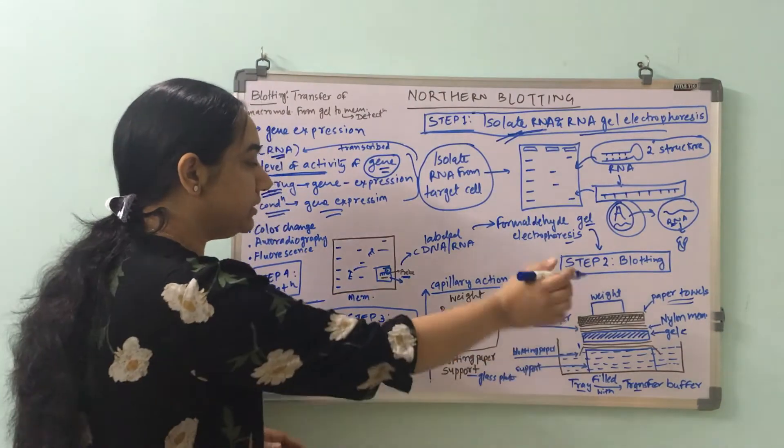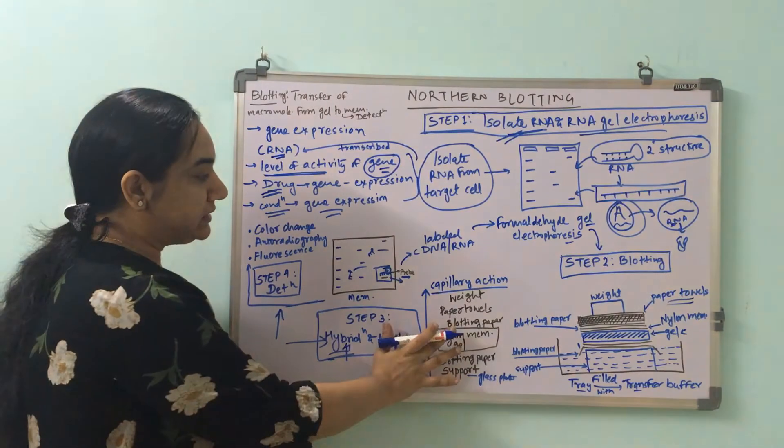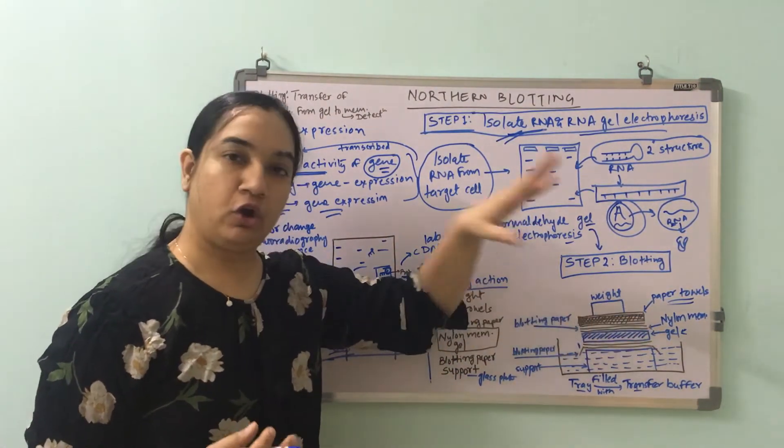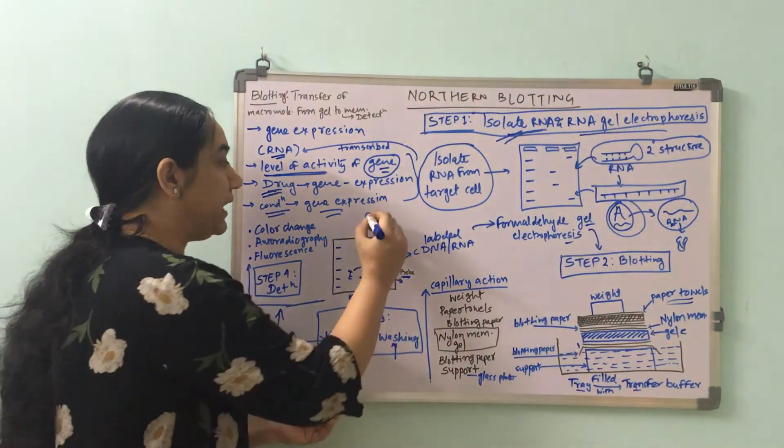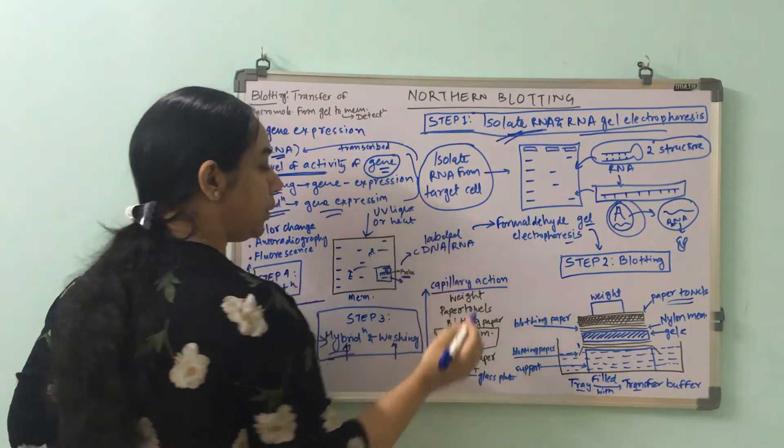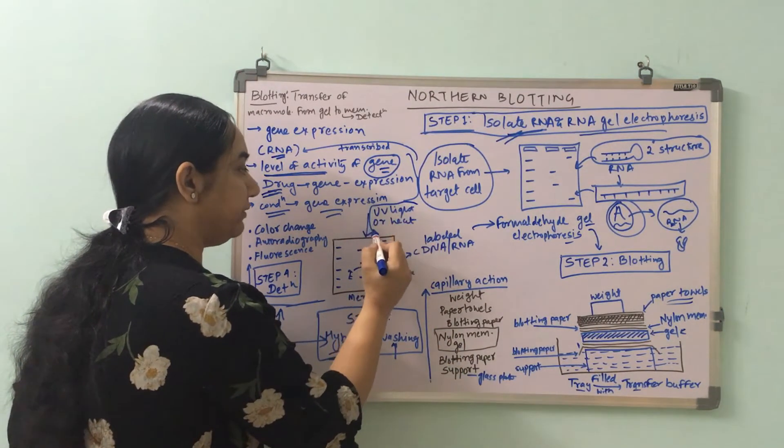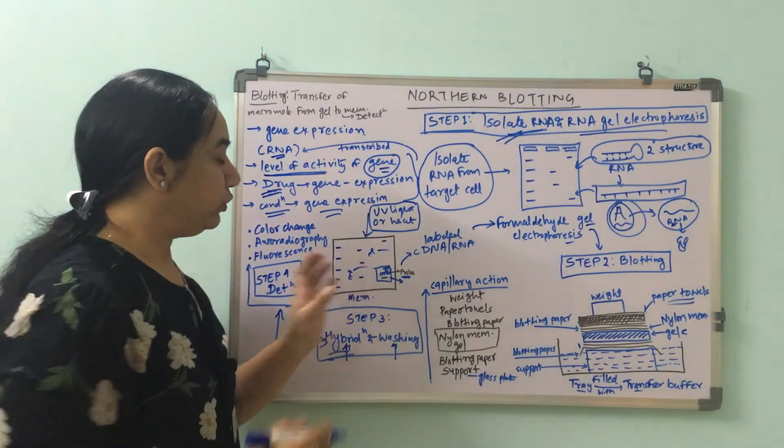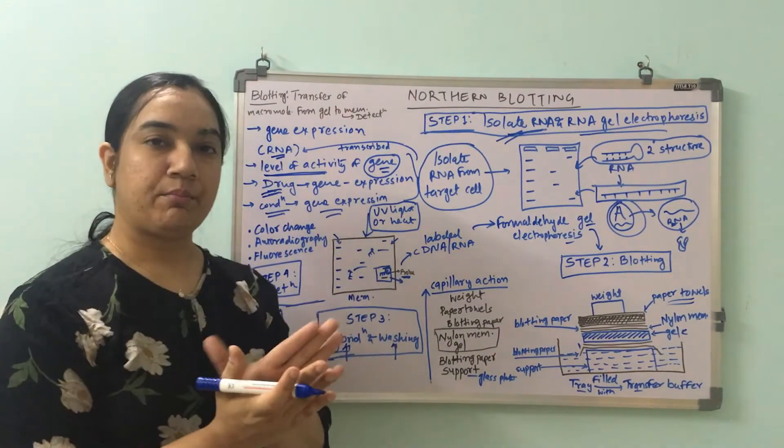Now what you need to do is detect the bands that are present on the membrane. Now one step before detection comes here is you are going to kind of lock all the bands that would be transferred on the membrane. That could be with the use of exposing it to UV light or heat. So once you have transferred your bands onto the membrane, you keep this membrane under the UV light or heat, expose it to heat in order to fix these bands onto the membrane so it will be tightly bound, it will be permanently bound to your membrane.